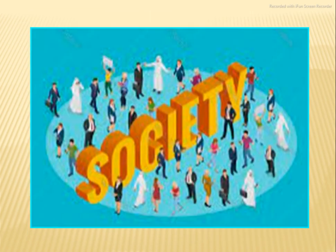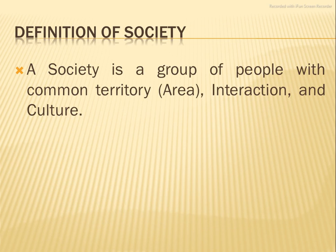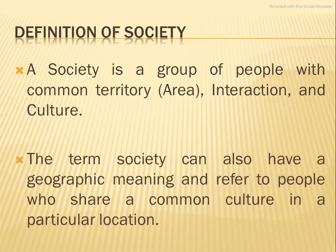First of all, we will explain about society, because sociology is a word that is linked to society. What is society? Sociology is where a group of people are in an area, where they also do interactions with their culture. Their culture is the same, their daily life is the same, they cooperate with coordination and cooperation. So the term society can also have a geographic meaning, and refer to people who share a common culture in a particular location.